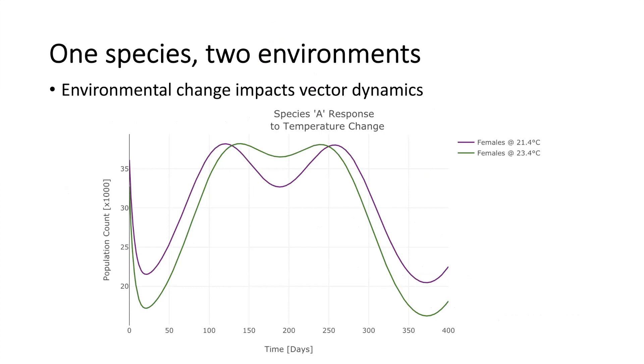First, looking at the purple line, we see population dynamics under a temperature scenario where over the course of just a little more than a year's worth of seasonal fluctuations, 400 days, the average temperature is 21.4 degrees Celsius.